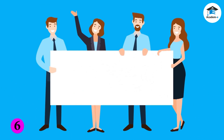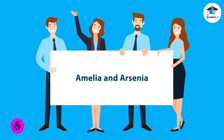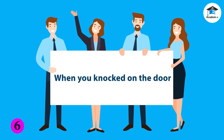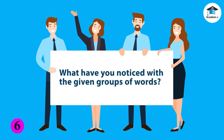Now, look at the following group of words and analyze them. 'Amelia and Arsenia' — what happened to Amelia and Arsenia? What did they do? Nothing is indicated. 'My most embarrassing moment' — does this group of words indicate the most embarrassing moment of the speaker? No. 'When you knocked on the door' — what happened when you knocked on the door? Nothing. 'Enter the hall a while ago' — who entered the hall? No one. They do not express a complete thought. Hence, we call them fragments.